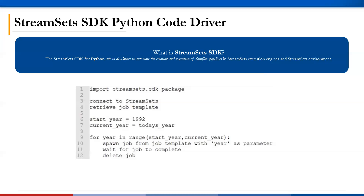On the slide is pseudocode that takes you through a high-level overview of the programmatic approach for the Census data specifically. First, the StreamSets SDK library is imported so we're able to connect to StreamSets to retrieve the job template with a job template ID. The start year is initialized along with the current year — so that'd be 2022. We loop through each year from 1992 to 2022, use the year as a parameter, and the job is spawned off from the job template. The code is programmatically waiting for the job to reach completion status, and then it gets deleted to prevent clutter from all these spawned jobs. Then the next year gets started and it loops through the same thing again. The code for BLS is very similar — it's just slightly different because it loops through a list of series IDs.